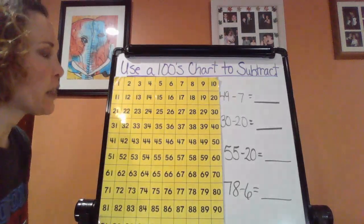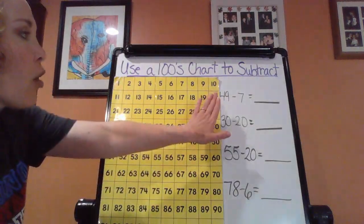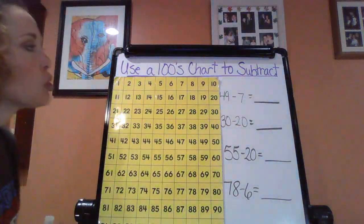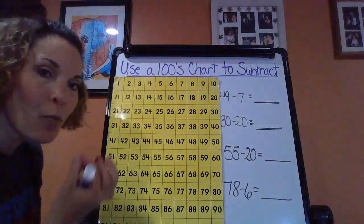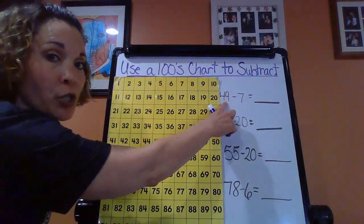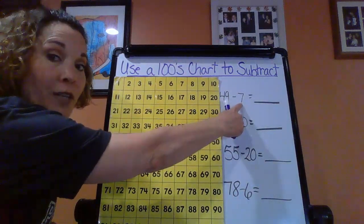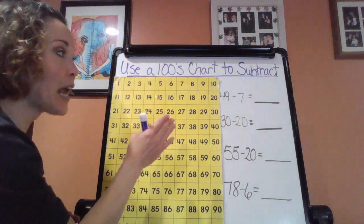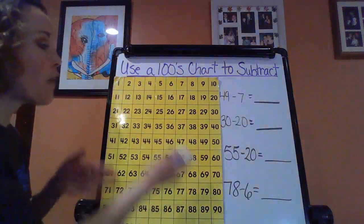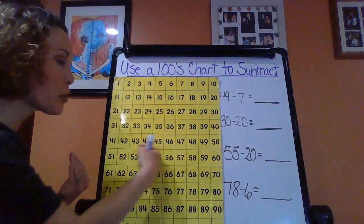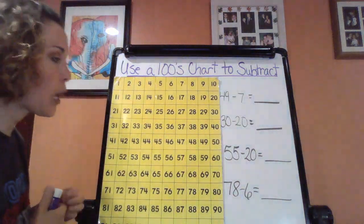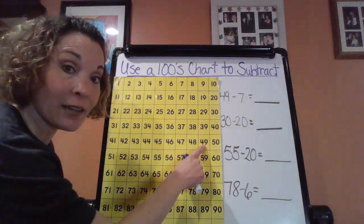Now, I wanted to start with a simpler equation: 49 minus 7. Notice I'm taking away a single digit number. So if I have 49 minus 7, let's go back to strategies that we've learned at the beginning of the school year. I want to start at my larger number and go back just these single digit numbers. So if you're looking at 7, I want to count back 7. Think about the direction that you want to go in. If I want to start at 49, I want my numbers to decrease, so therefore I'm going to be moving to the left.